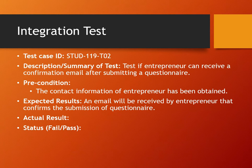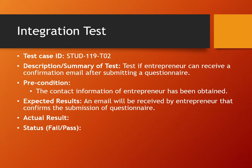The next test is after integration. In this integration test, we want to test if an entrepreneur can receive a confirmation email after submitting a questionnaire. The precondition is that the contact information of an entrepreneur has been obtained. The expected result is that an email will be received by an entrepreneur that confirms the submission of the questionnaire. This test is still ongoing and we will report the result later.